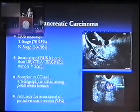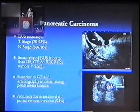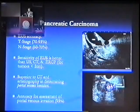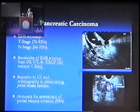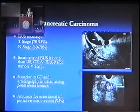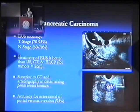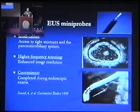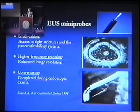Moving to the pancreas. Accuracy for EUS is very high for T staging, in the order of 90%. It has better sensitivity than ultrasound CT and ERCP, specifically when it comes to small lesions. And it does have a very nice predictive value for determining vascular invasion, specifically the portal vein, as you're going to be seeing in some of the cases in the workshop.